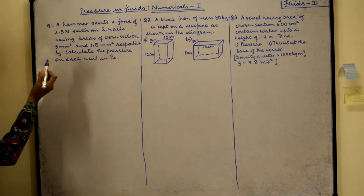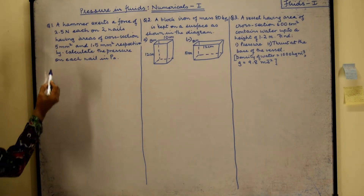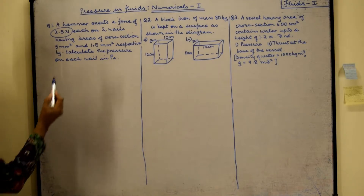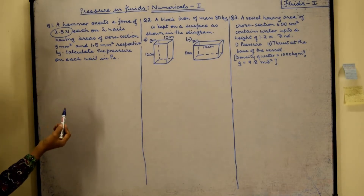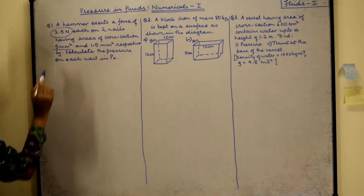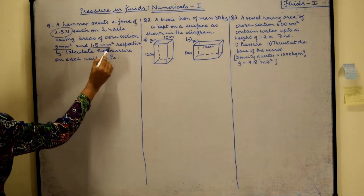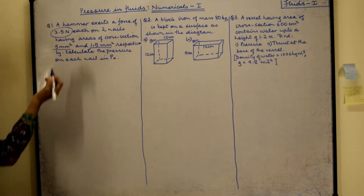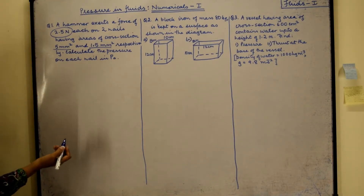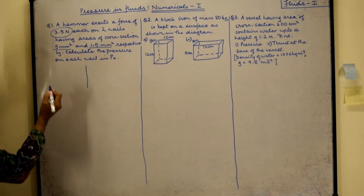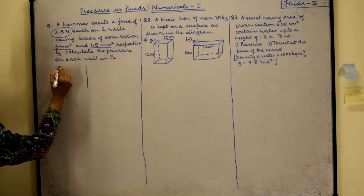Our first question says: a hammer exerts a force of 2.5 newton on each of two nails, and the nails have areas of cross section 5 mm² and 1.5 mm² respectively. Calculate the pressure on each nail. When given a question like this, the best way to start is to write the data for each nail.